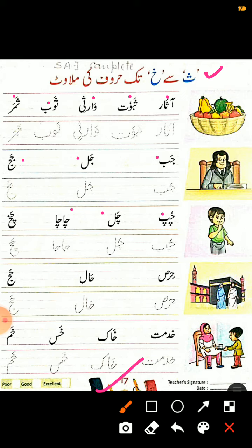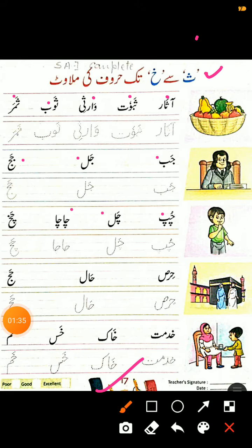آگے ہے جیم بے جبرجب، جیم لام جبرجل، جیم جبرجج، چے پے پیش چُپ، چے لام جبرچل، چے الف جبرچا — چاچا — چے خے جبرچخ۔ (Letter blending readings: jeem combinations — jab, jal, jaj; che combinations — chup, chal, cha — chacha — chakh.)